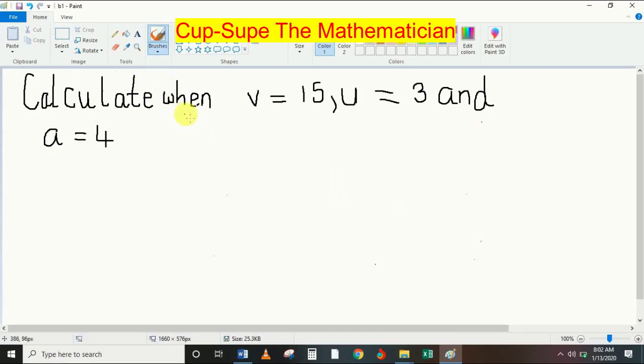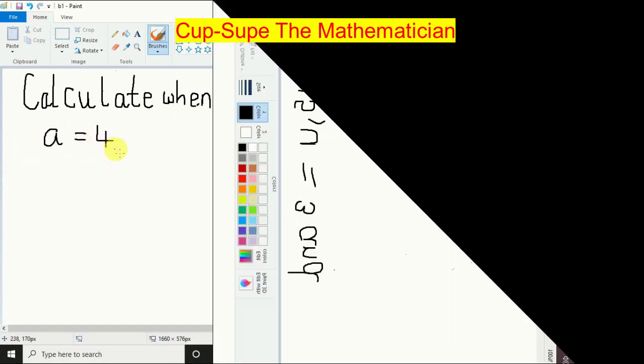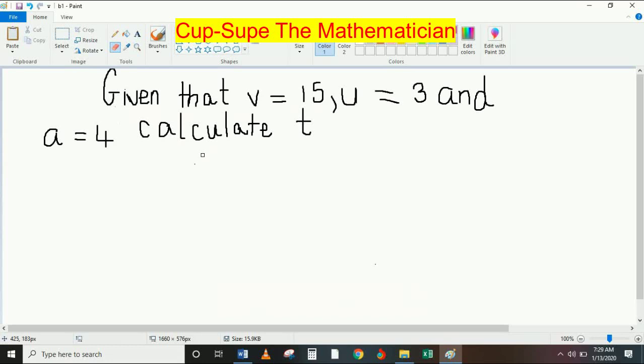Part B: Calculate T when V equals 15, U equals 3, and A equals 4.